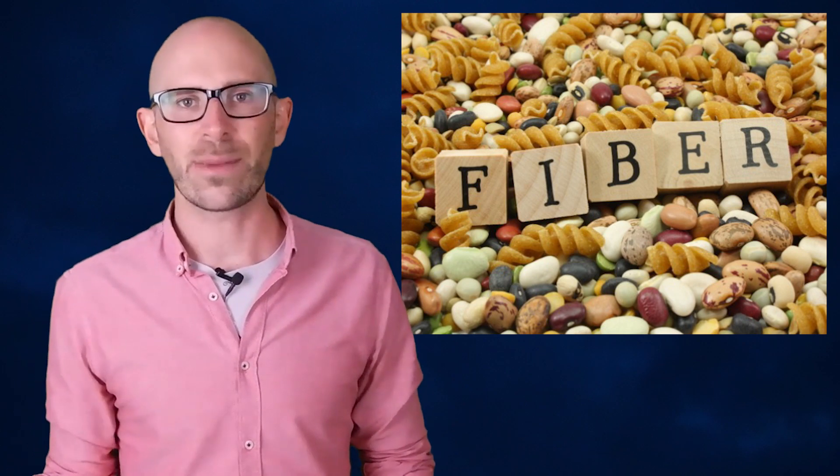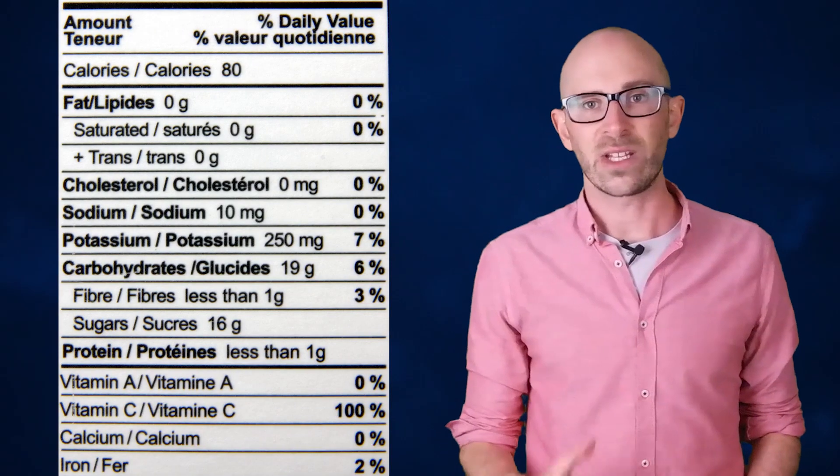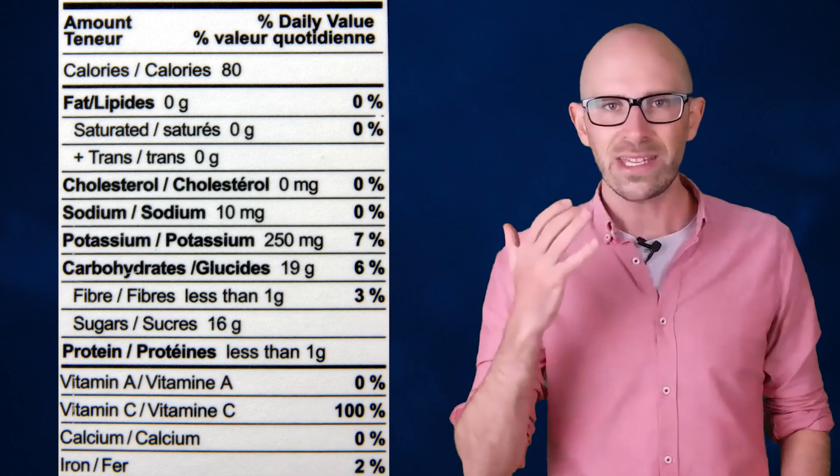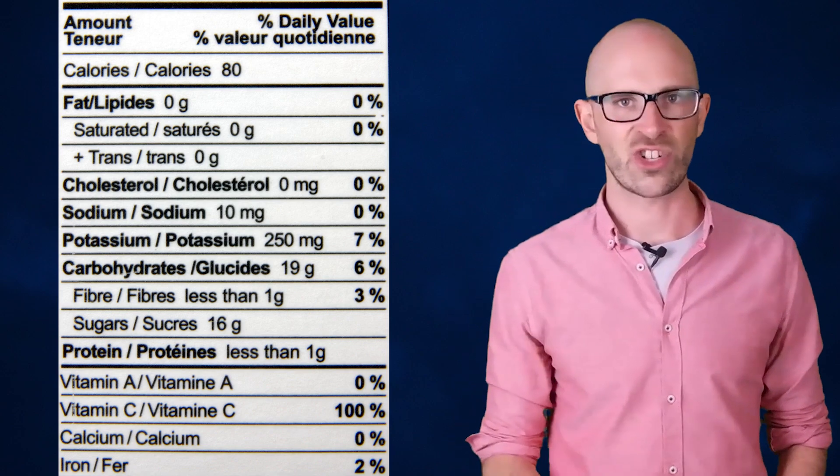Instead, they used an easier method known as the Atwater System. This approach adds up the calories available through the energy containing nutrients in the food item, like protein, carbohydrates, fats, and alcohols. They use standard reference tables for common ingredients based on their energy densities.